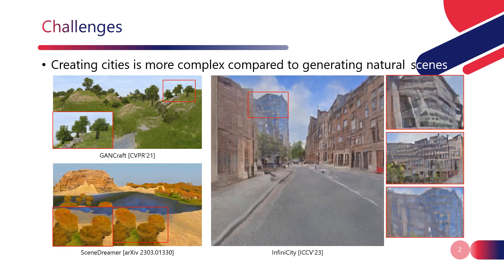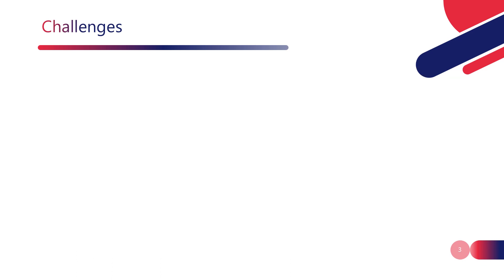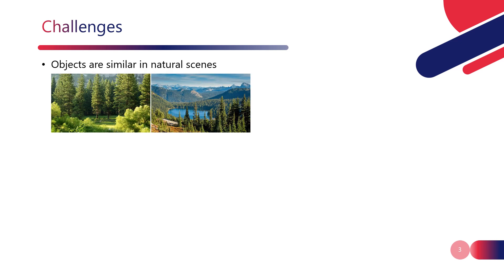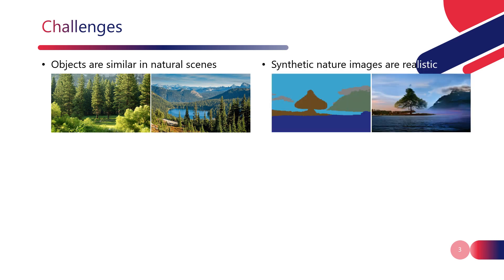During the video playback, you might not have paid attention to the somewhat unrealistic trees on the left, but you surely noticed the distortion in the building facades on the right. The recent success in natural scene generation can be attributed to two main factors. Firstly, objects of the same category in natural scenes tend to share similar appearances. Secondly, techniques like SPADE for image translation enable the rapid generation of a large volume of high-quality training data.